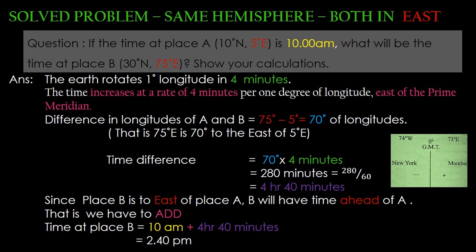The second step is to find out the time difference. For 1 degree longitude the earth takes 4 minutes, so for 70 degrees of longitude we need to multiply 70 with 4, which gives 280 minutes. Now we have to convert the minutes into hours: 280 divided by 60 is 4 hours 40 minutes.